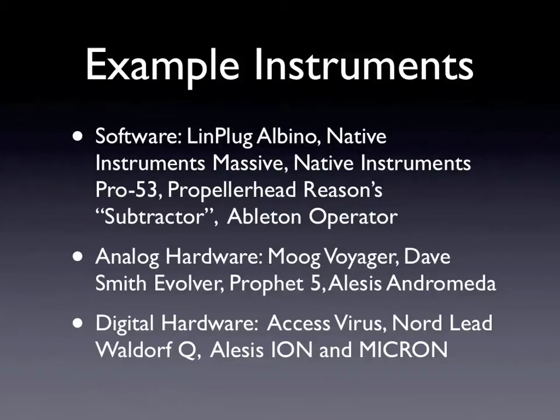Your analog hardware example instruments: Moog has a whole range of subtractive instruments. There's the Dave Smith Evolver, the Prophet 5, the Alesis Andromeda. These are all analog hardware. In other words, they use electrical circuitry, but they don't have a digital sound generation engine. It's all completely on the atomic scale, and there's no digital. So it's much higher resolution. A lot of people think that the pure analog hardware sounds smoother.